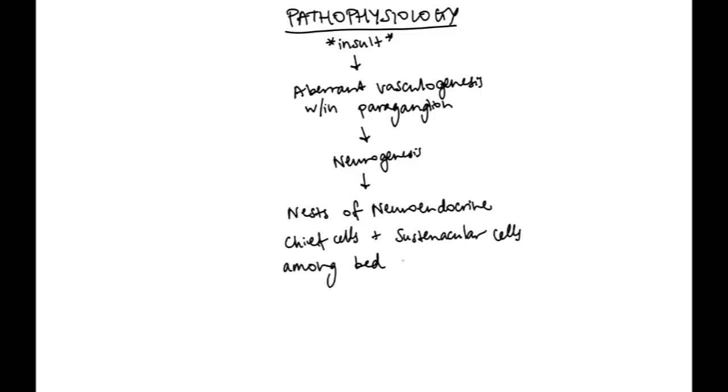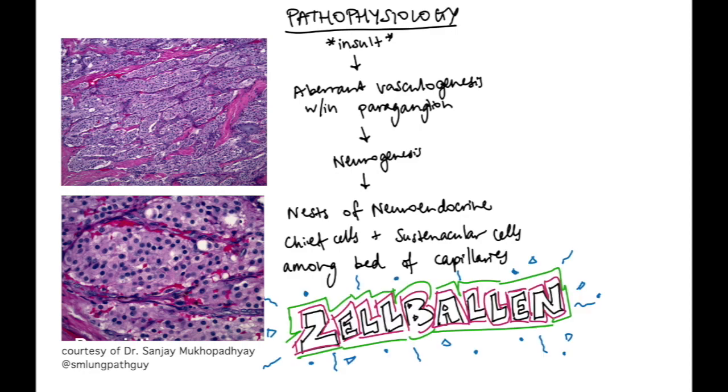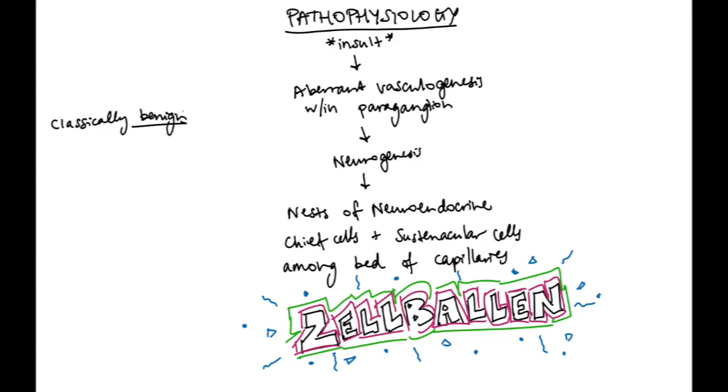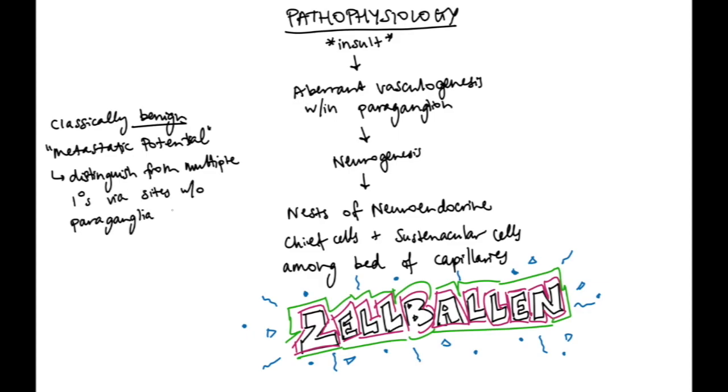The pathophysiology of paragangliomas is very interesting, and the research is ongoing. There is some sort of insult that leads to aberrant vasculogenesis within a paraganglion, and that vasculogenesis facilitates neurogenesis. The insult used to be thought to be from a notch pathway dysregulation, but this has lately been in question whether it's just correlation versus causation. But this neurogenesis leads to nests of neuroendocrine chief cells and sustentacular cells among a bed of capillaries. And with all these buzzwords, I know that you already know that I'm talking about Zellballen. These tumors are classically benign. Metastatic potential is difficult to distinguish from multiple primaries, which is also a common issue in patients with a genetic predisposition. The way you distinguish it is just if the tumors are in sites without paraganglia, for example, lymph nodes, that would suggest metastasis.